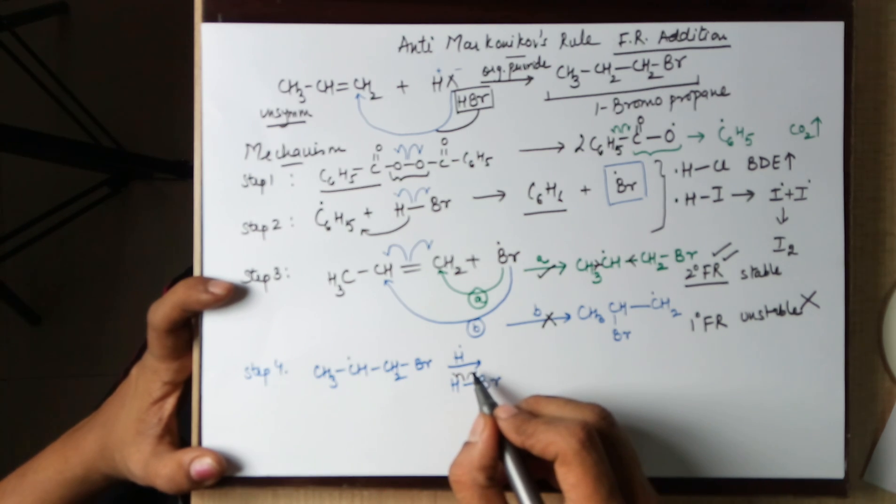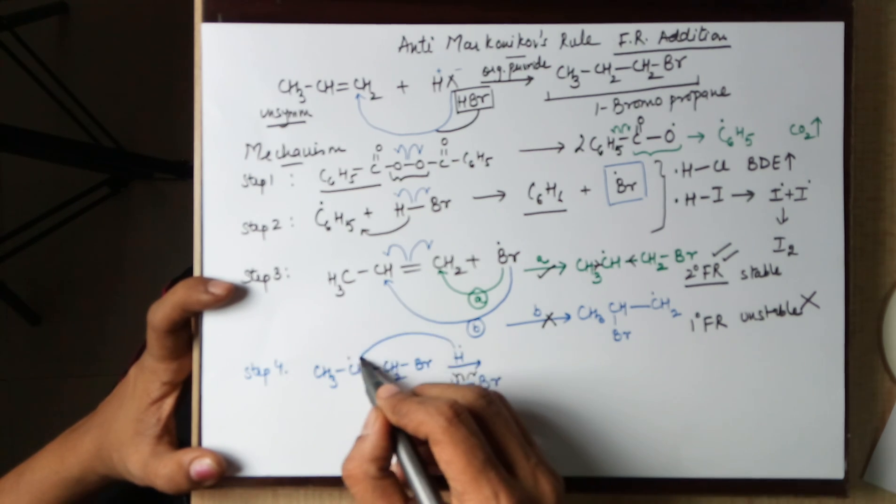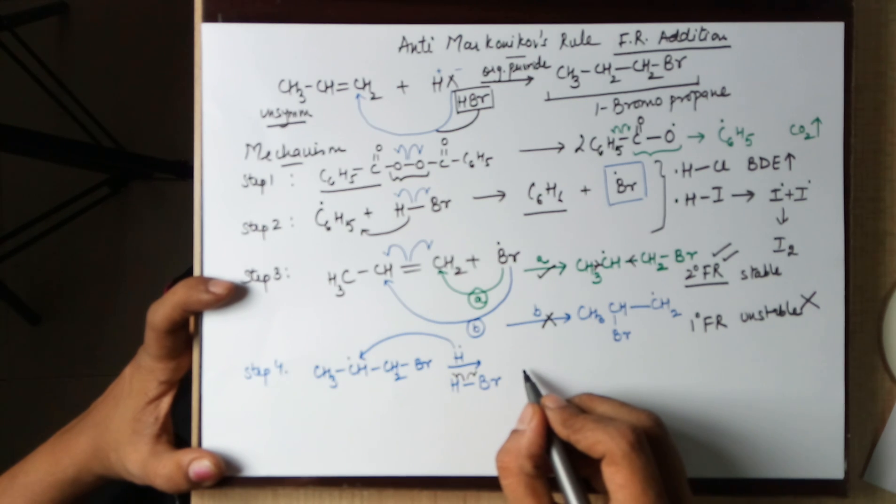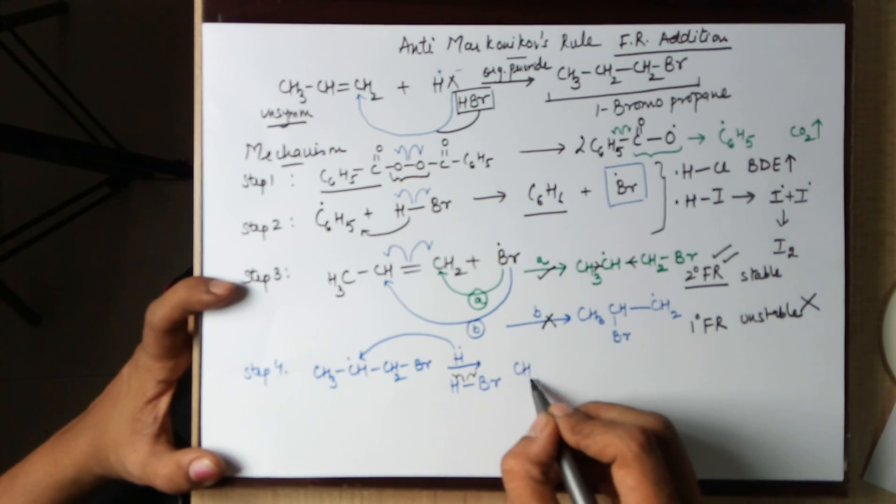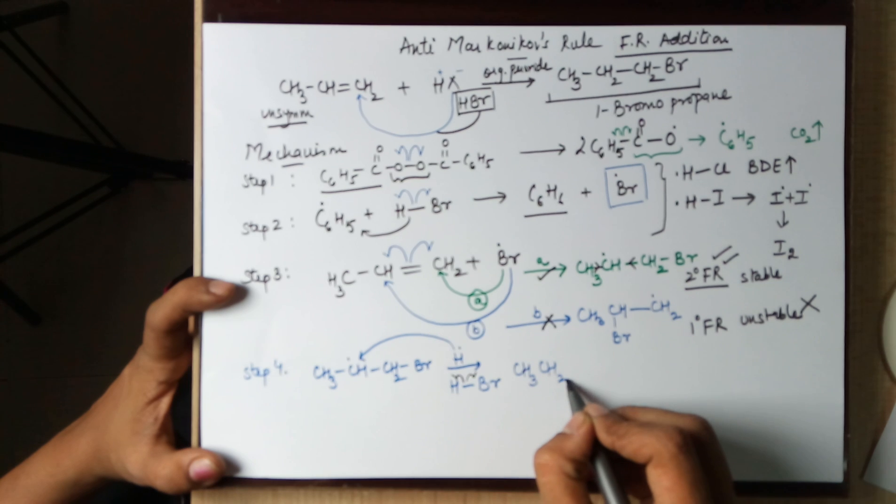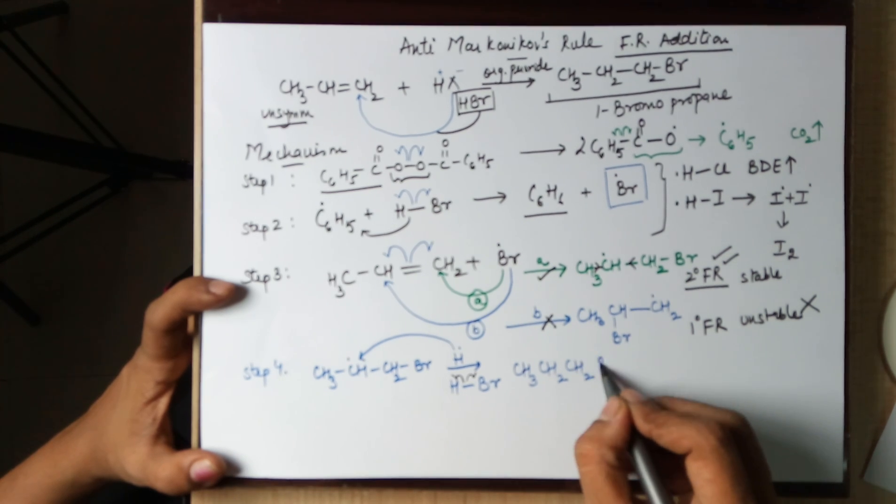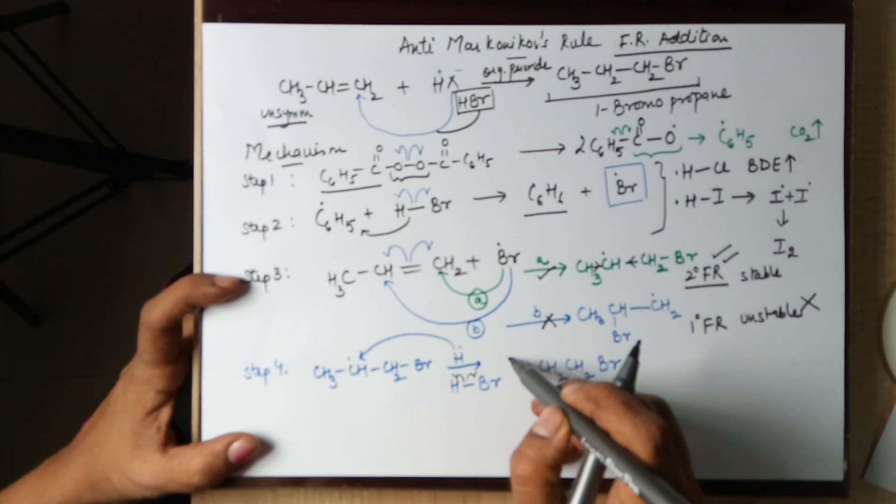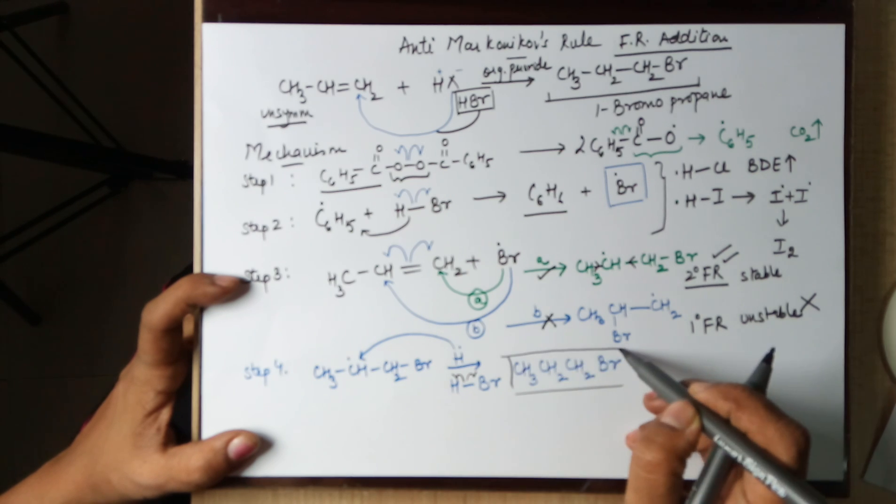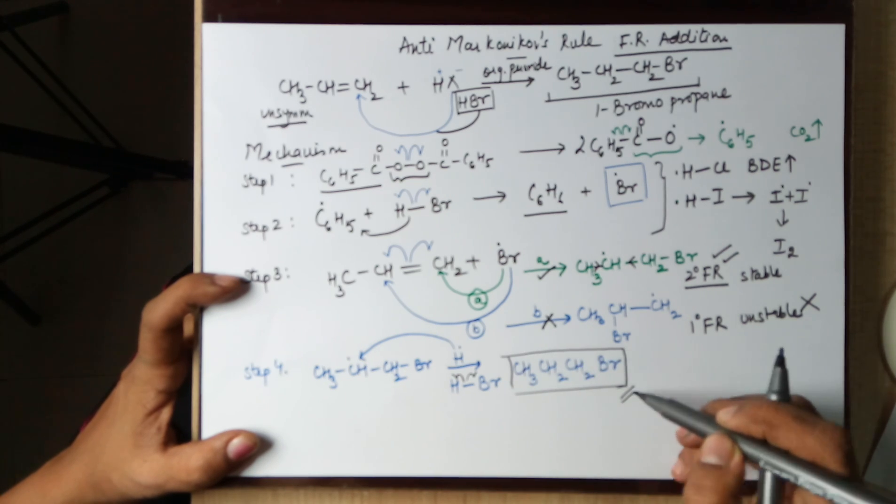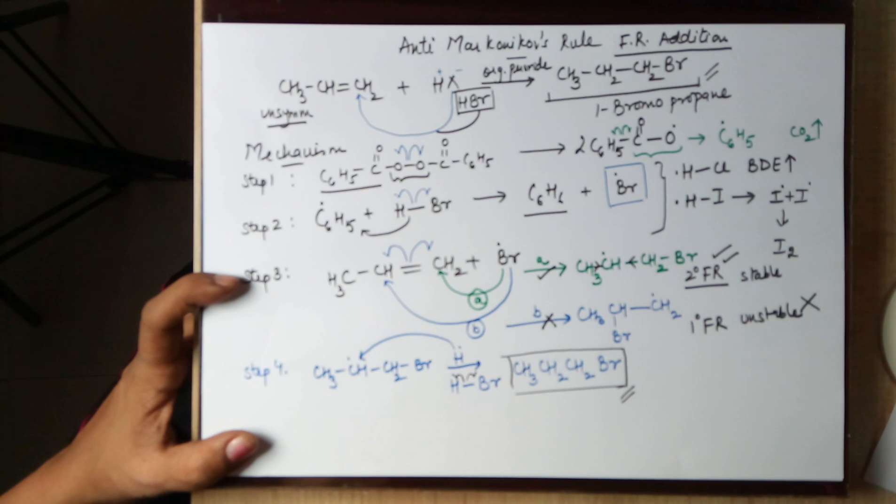This hydrogen free radical now moves on to the free radical on the second carbon, leading to CH3, CH2, CH2, and a Br. So, your final product is 1-bromopropane, as was predicted in the beginning.